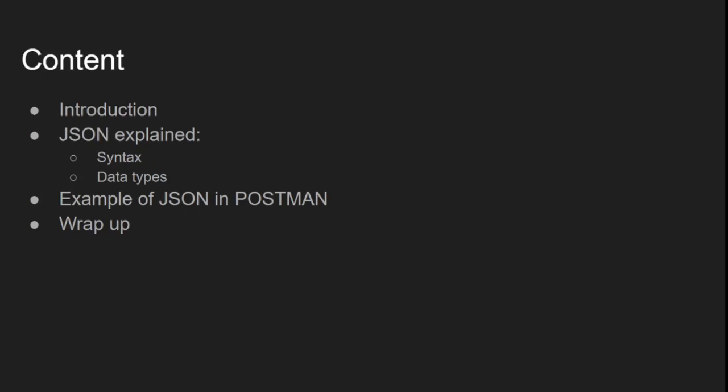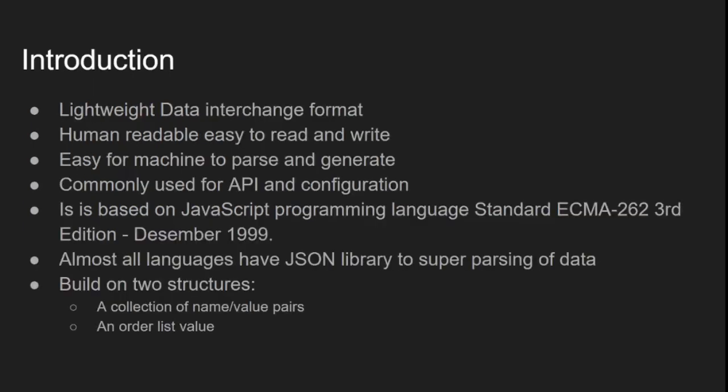So what is JSON? It's a lightweight data interchange format. It's human readable — easy to read and write. As you can see in my example, it's in a text format, and therefore it's very easy for machines to parse and generate. It is commonly used in APIs and configuration files.